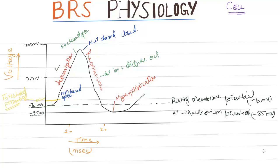Hyperpolarization after-potential: potassium conductance remains higher than at rest for some time after closure of the sodium channels. During this period, the membrane potential is driven very close to the potassium equilibrium potential.